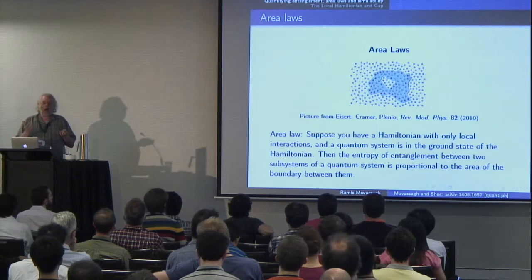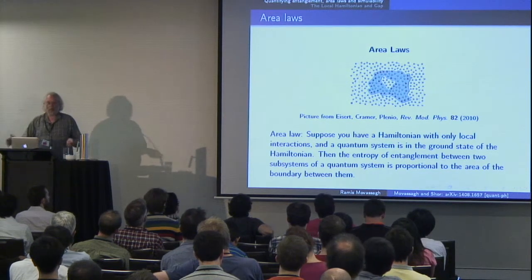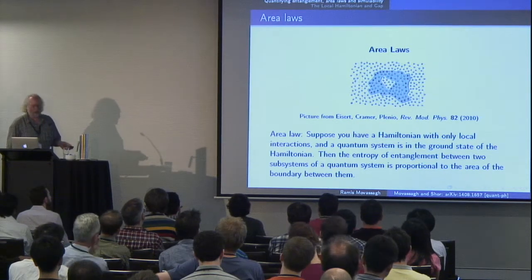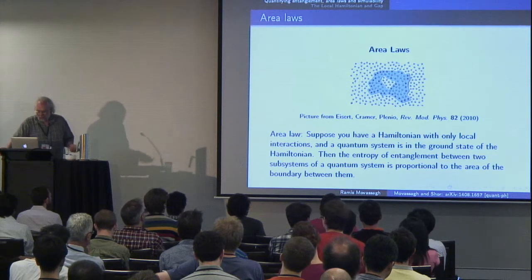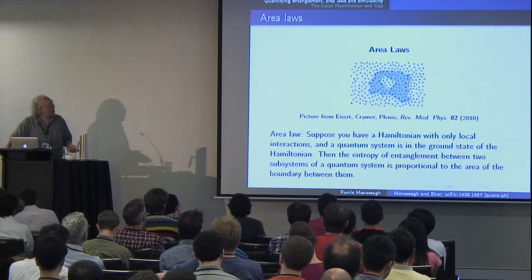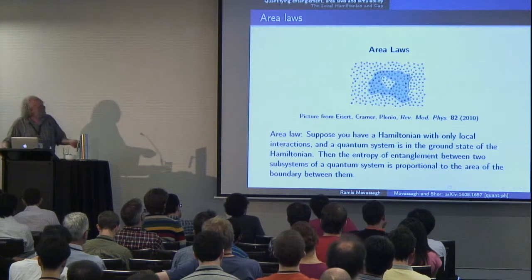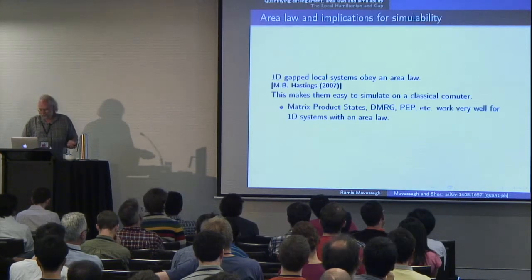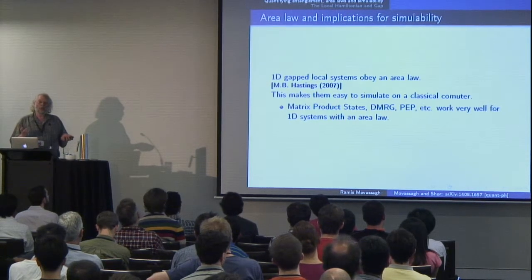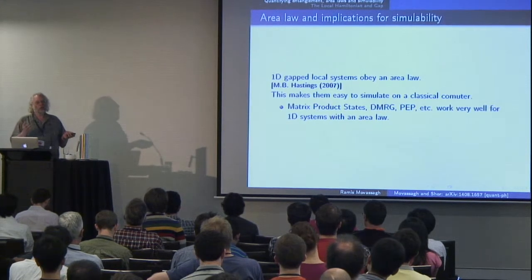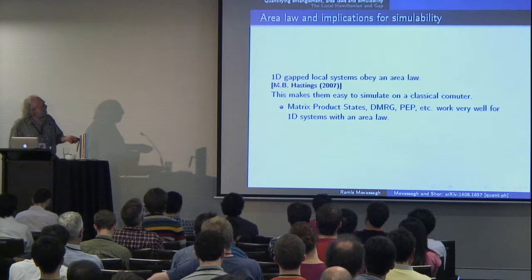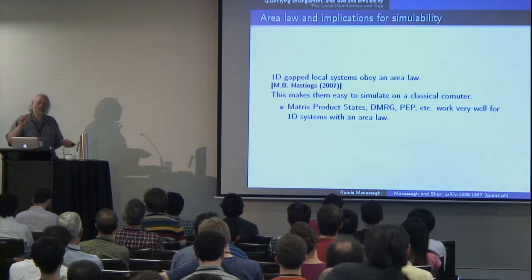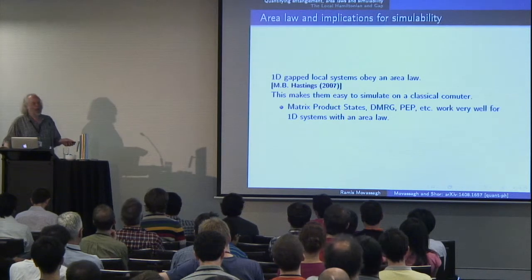This work was about area laws. The area law — at least one formulation — is: suppose you have a Hamiltonian with only local interactions and the quantum system is in the ground state. The area law says the entropy of entanglement between two subsystems is proportional not to the volume of the subsystem, as you might think at first, but to the area of the boundary between them. Area laws have only been proved in one case: Hastings proved that one-dimensional gapped local systems obey an area law, where gap means a constant size gap between the ground state and the excited state.